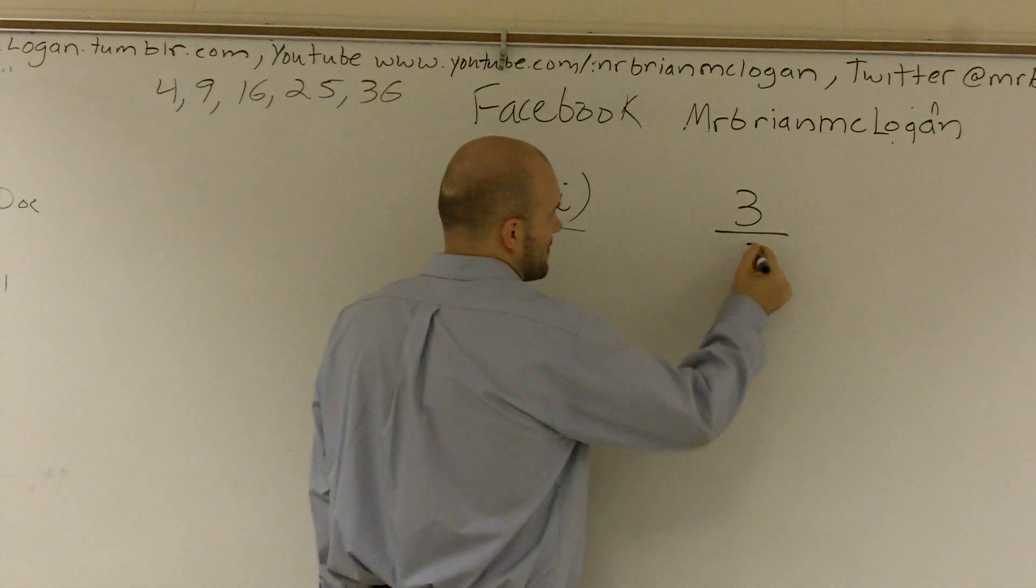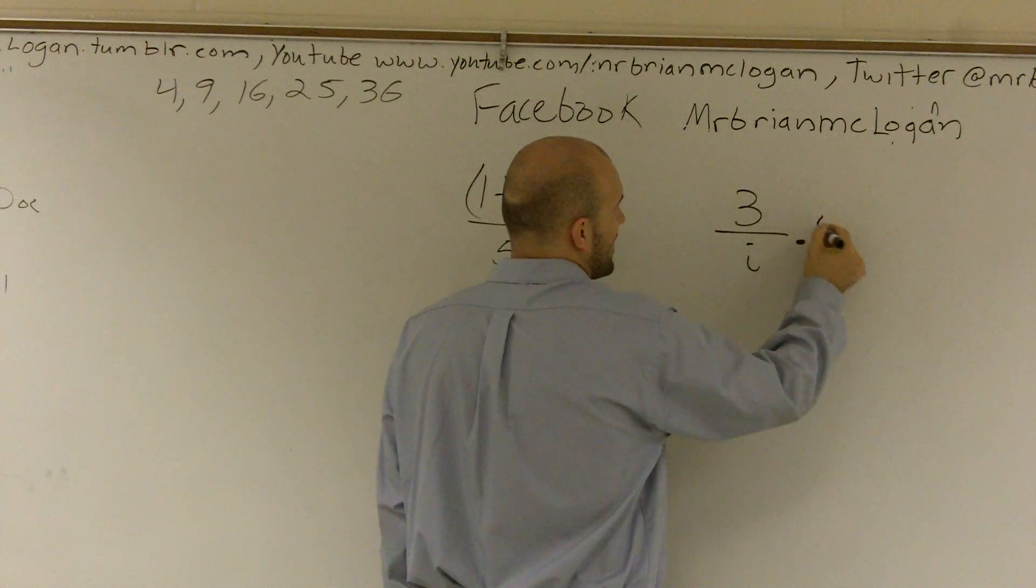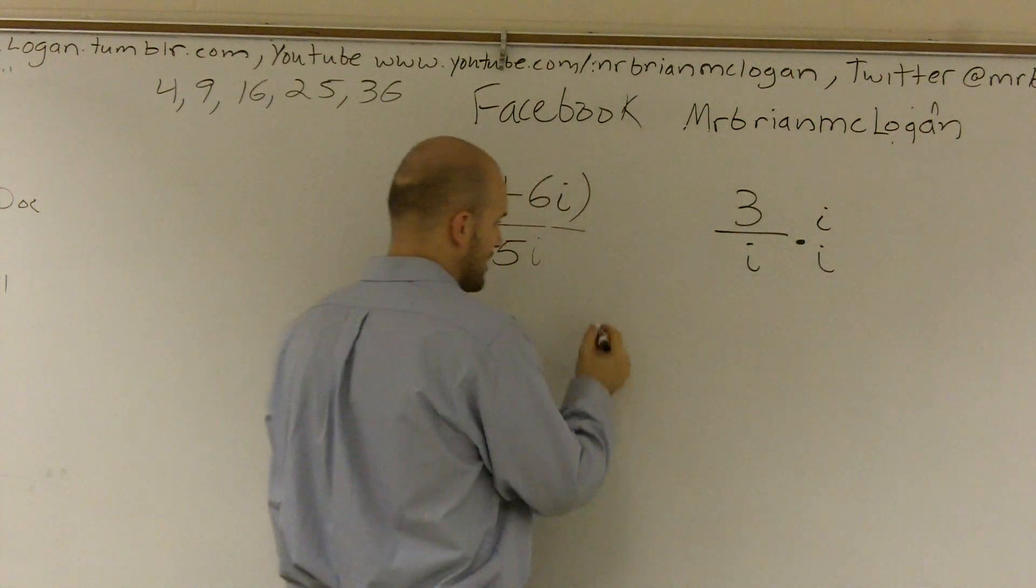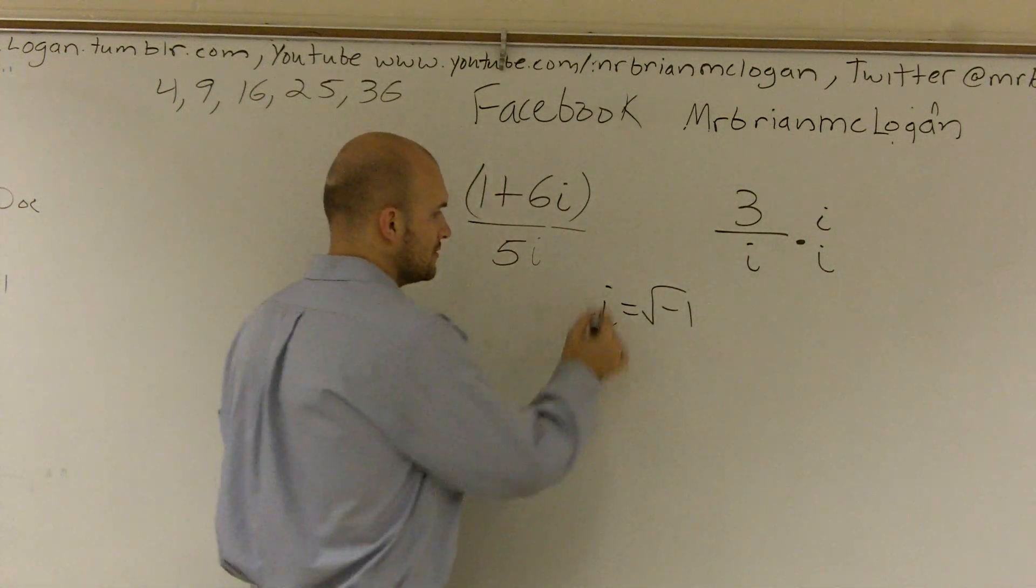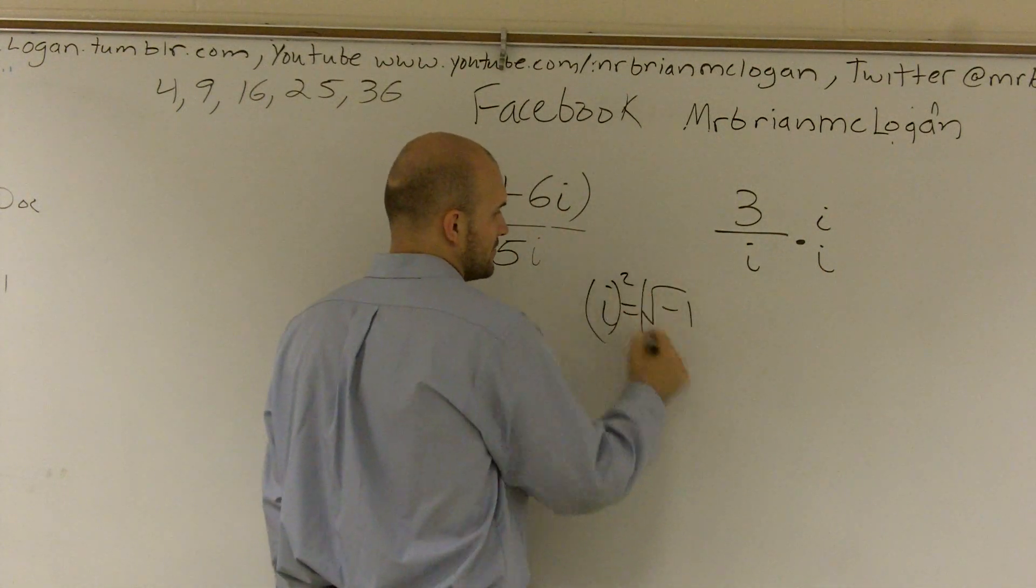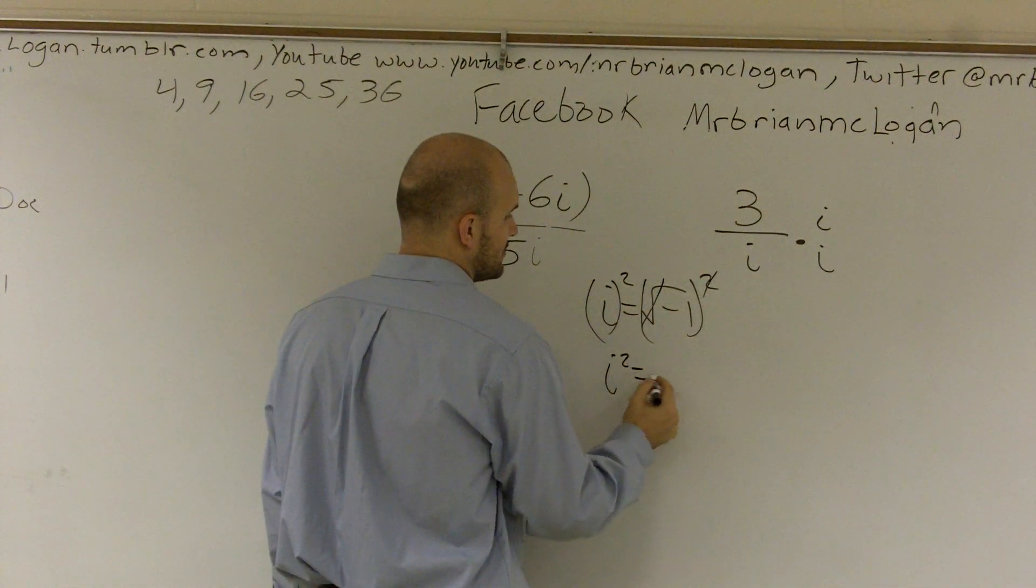So let's say we have i. So to get rid of i on the bottom, we're going to have to multiply by i on the bottom and the top. And the reason why is if I know i equals the square root of negative 1. Well, what is i squared? Well, let's square i squared. Those two cancel out. I squared equals a negative 1.